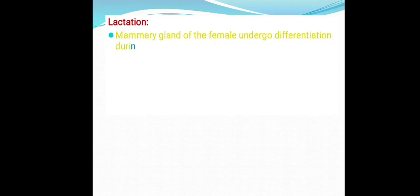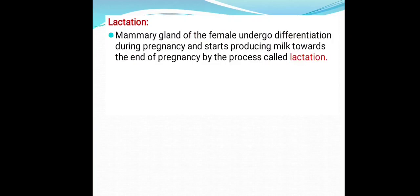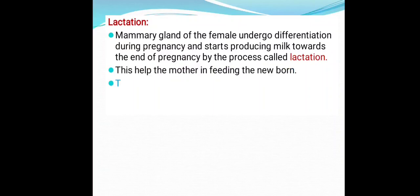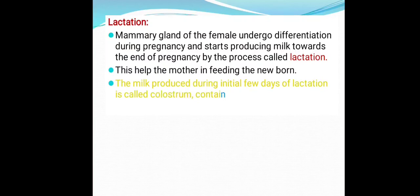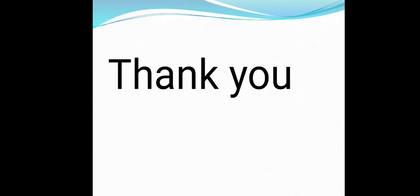After parturition comes the lactation period. The mammary glands of the female undergo differentiation during pregnancy and start producing milk towards the end of pregnancy by the process called lactation, which helps the mother in feeding the newborn. The milk produced during the initial few days of lactation is called colostrum, which contains antibodies and proteins.